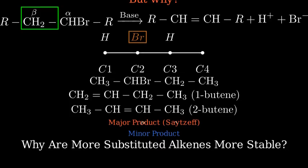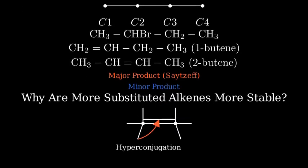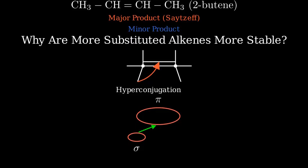First, hyperconjugation. This is an interaction where electron density from the sigma bonds of adjacent carbon-hydrogen bonds can be donated into the pi bond of the double bond. More alkyl groups mean more opportunities for hyperconjugation, which leads to greater stability. This overlap between the sigma C-H bond orbitals and the pi bond orbitals disperses electron density, making the molecule more stable.